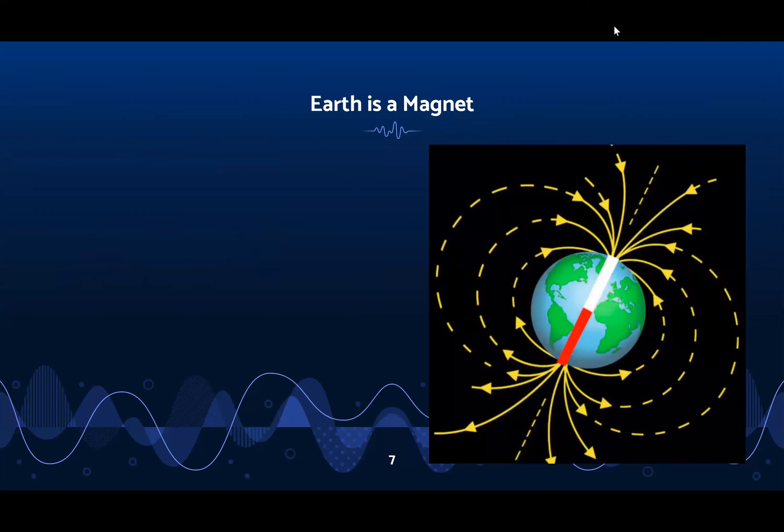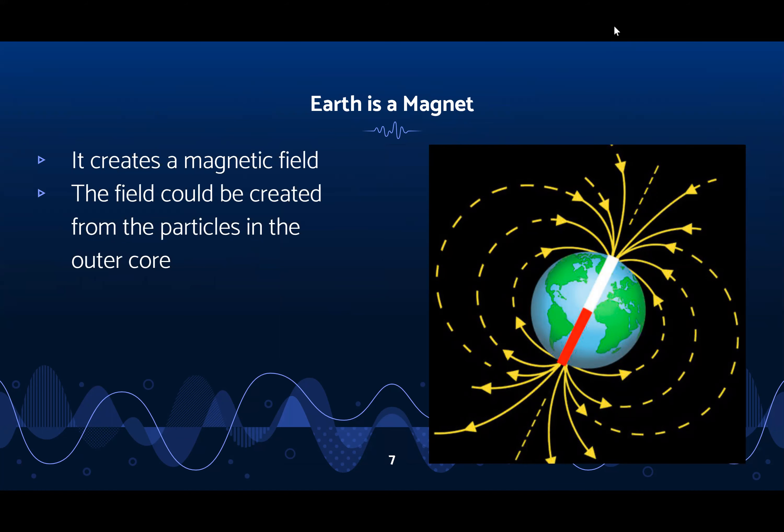When you have a magnet, this causes a magnetic field, which is when you have a region of magnetic field lines that extend from between the two poles. You can see the dash lines here in the picture.